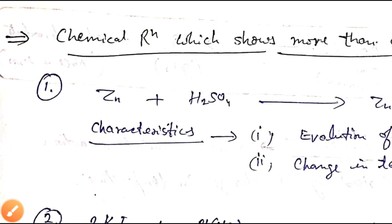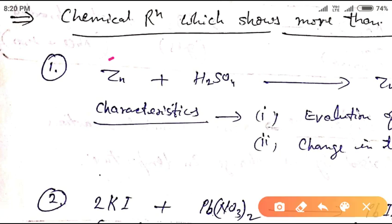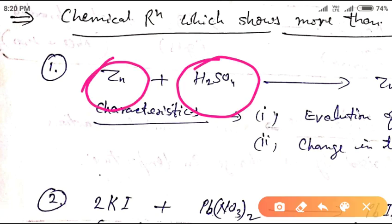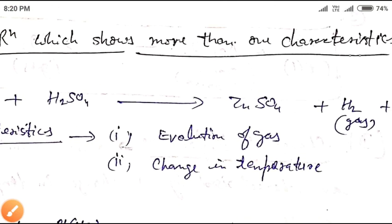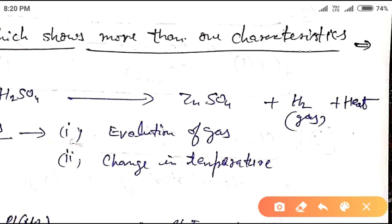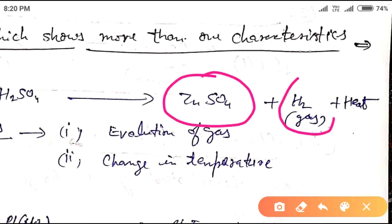We are going to explain chemical reactions which possess more than one characteristic feature. In the first example, when zinc reacts with sulfuric acid, it gives out zinc sulfate as well as hydrogen gas, and heat is also produced in the reaction.